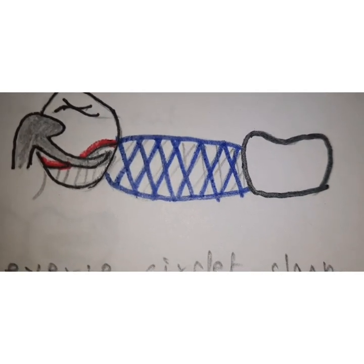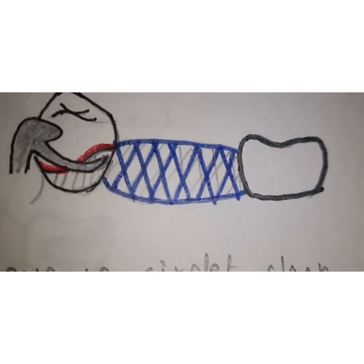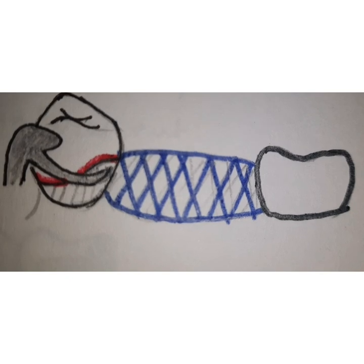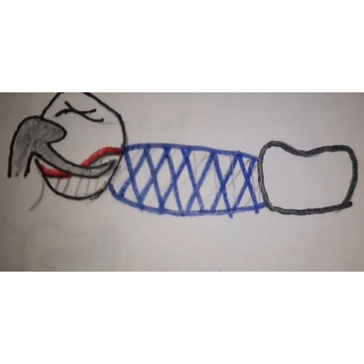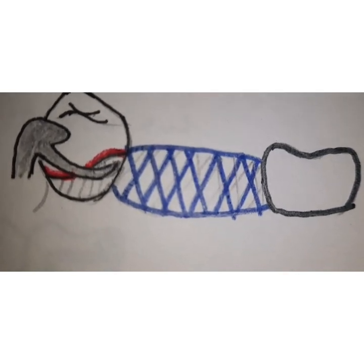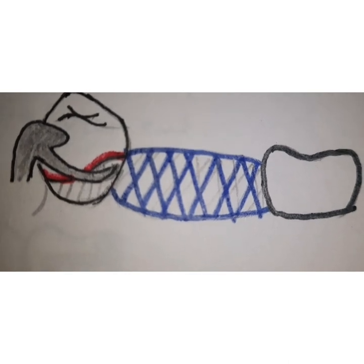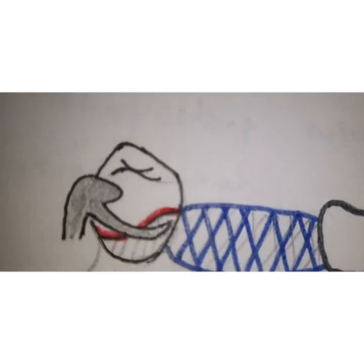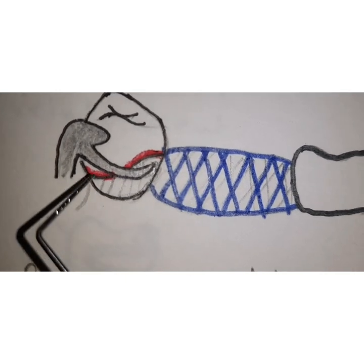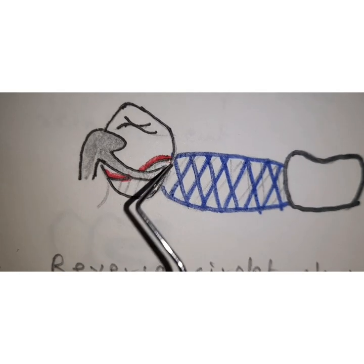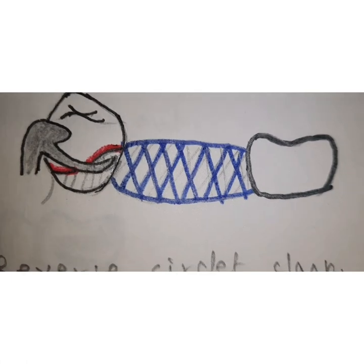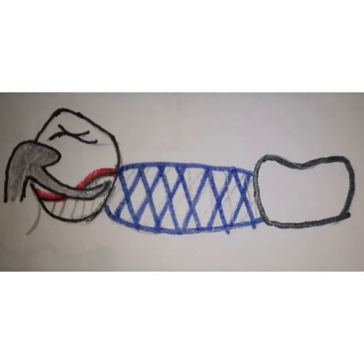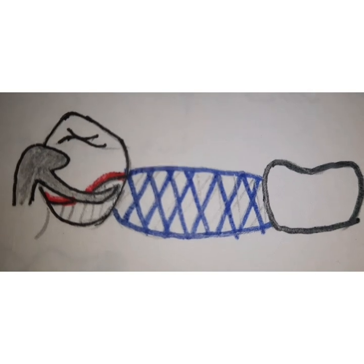Disadvantages of the reverse circulate clasp: when occlusal clearance is insufficient, the clasp thickness is reduced, compromising its strength, requiring additional occlusal rests on other teeth to compensate. Since the clasp runs from mesial to distal surface, aesthetics are poor, especially for first premolars. Wedging may also occur between the abutment and adjacent tooth, leading to food lodgement and potential gingival tissue injury.